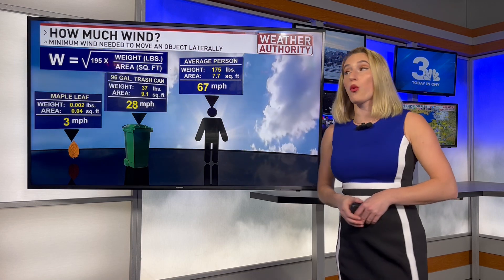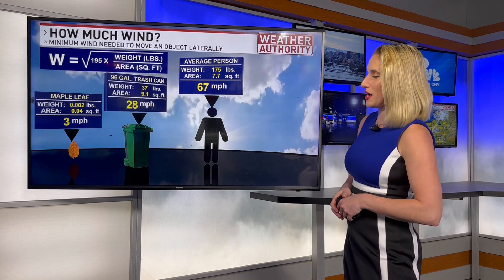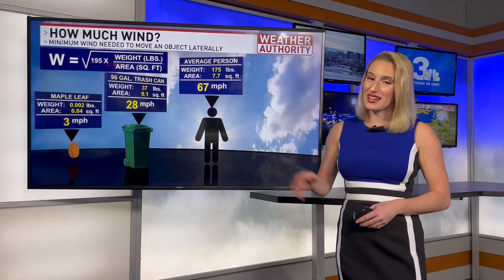Looking at a common average person, let's say they weigh about 175 pounds with 7.7 square feet of area. That takes about 67 miles per hour to move a person, which is the same level as severe wind gusts from a damaging thunderstorm. That can not only move a person, but can also cause damage to housing and even bring some trees down as well.